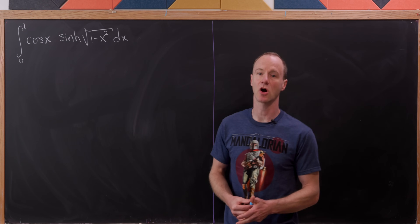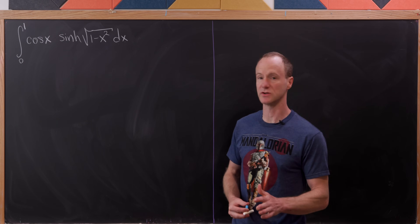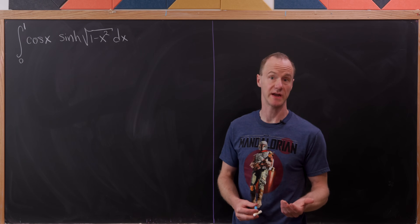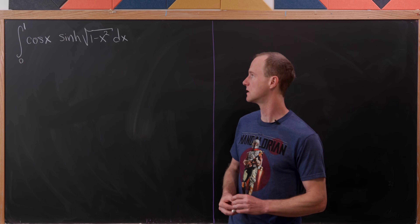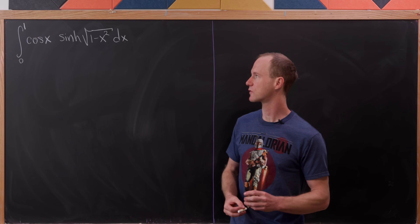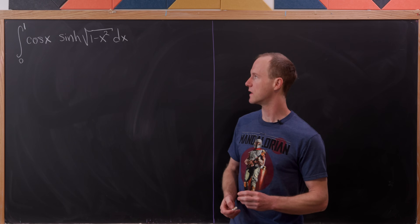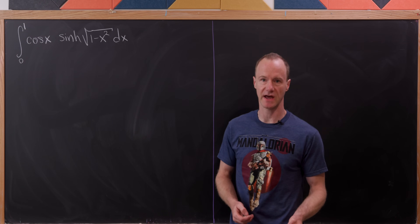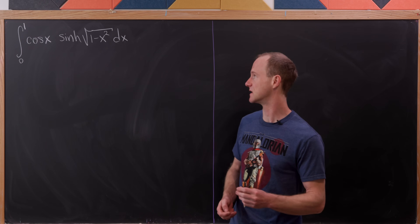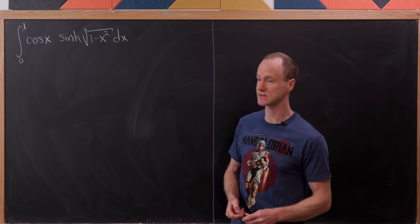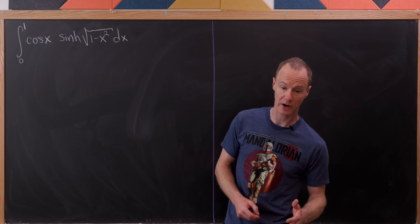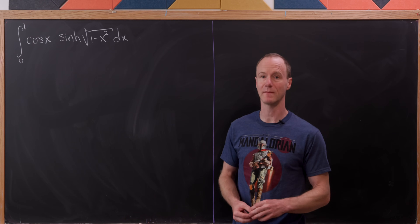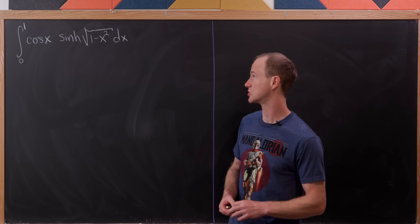Today we've got a classic hard integral to evaluate. We have the integral from 0 to 1 of cosine of x times the hyperbolic sine of the square root of 1 minus x squared.